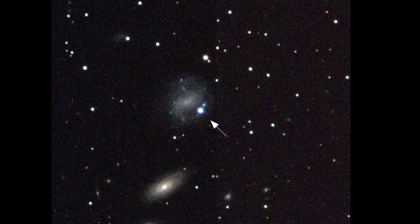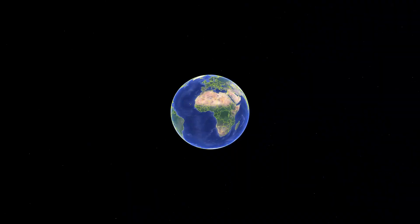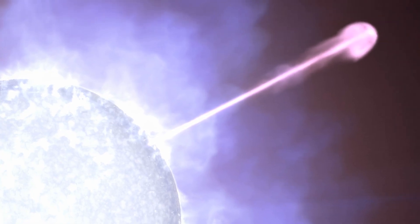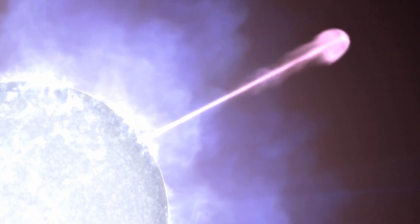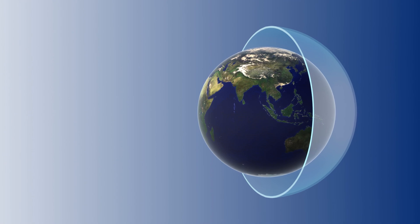However, the exact impact would depend on the burst's proximity, the strength of the radiation, and whether Earth is in the direct line of fire. Scientists generally agree that if a GRB were to occur within about 1,000 light-years from Earth and not be directed at us, it could still have noticeable effects on our atmosphere, particularly the ozone layer.